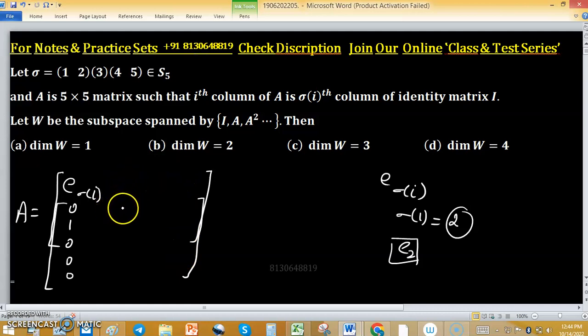σ(2) = 1, so [1, 0, 0, 0, 0]. σ(3) = 3, so [0, 0, 1, 0, 0]. σ(4) is going to 5, so [0, 0, 0, 0, 1]. And σ(5) is going to 4, so [0, 0, 0, 1, 0]. This is matrix A.